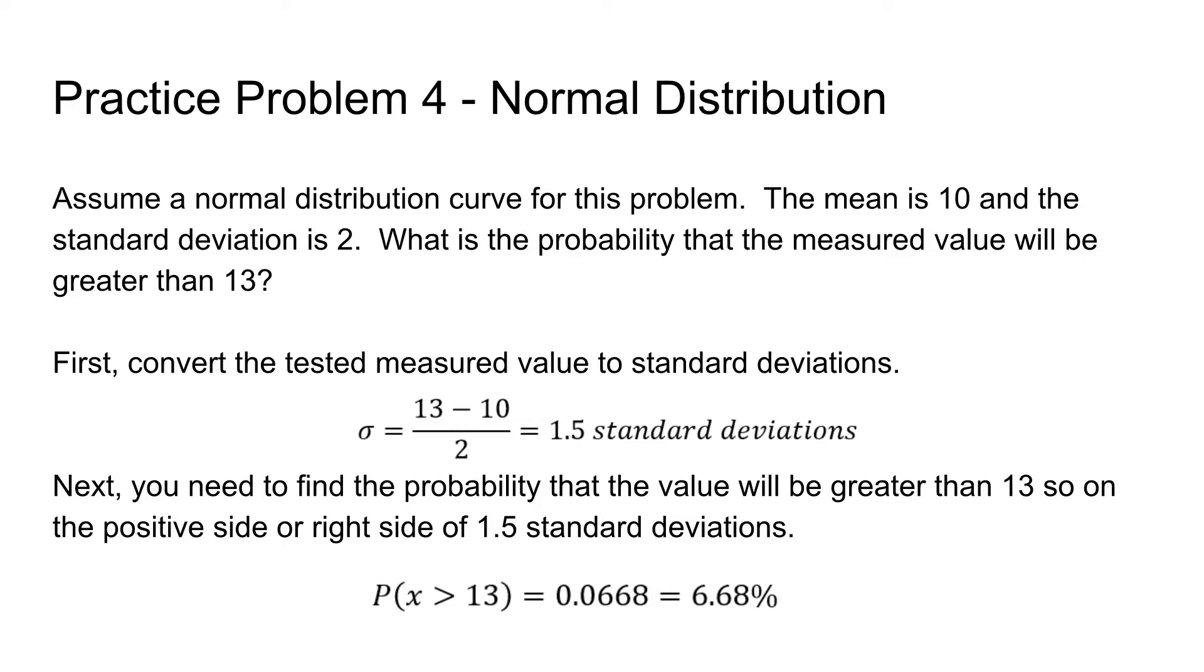Next, you can find the probability that the measured value is going to be greater than 13, or 1.5 standard deviations. You're going to want to get the p-value, which shows that the measured value of x is going to be greater than 1.5 standard deviations, which also relates to 13.